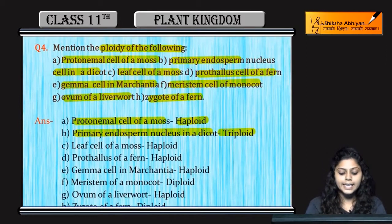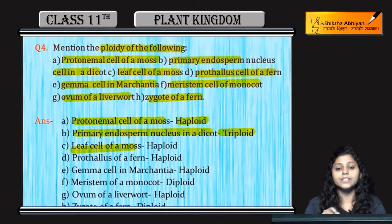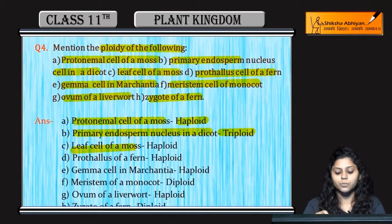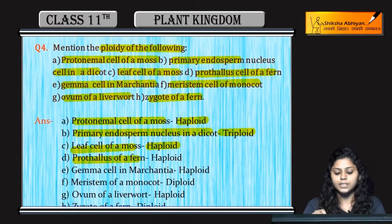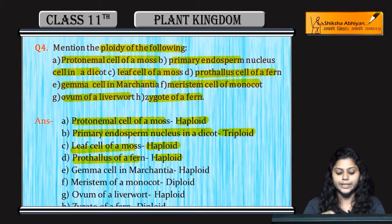Next is leaf cell of mosses — we have talked about mosses in the first point. Prothallus of ferns — these are also haploid.